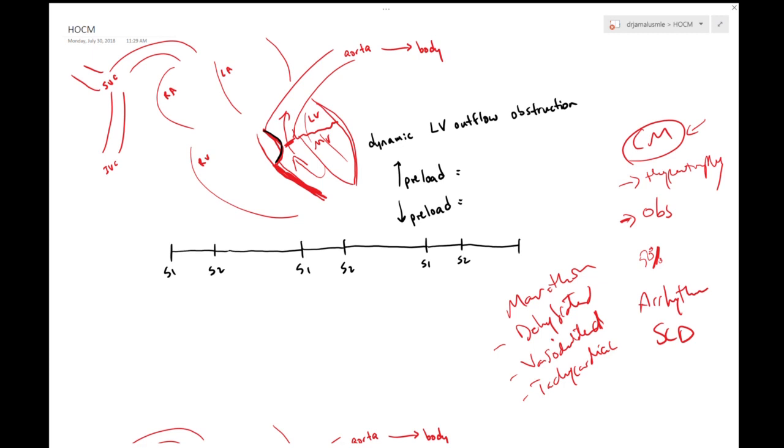And the other thing is tachycardic. When the patient is running he will be tachycardic, there will be no enough time for the ventricle to fill completely and thus again decreasing the preload.